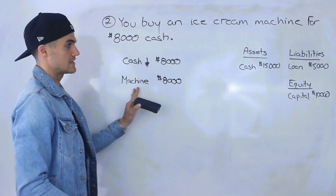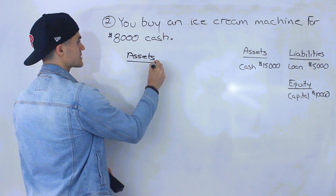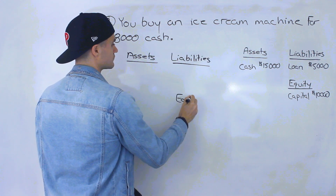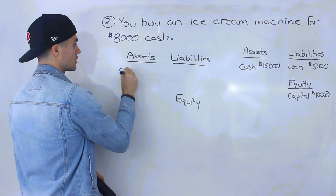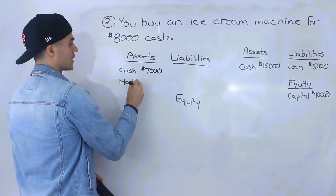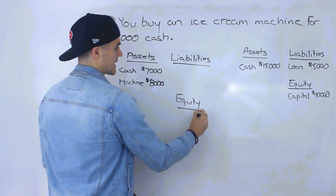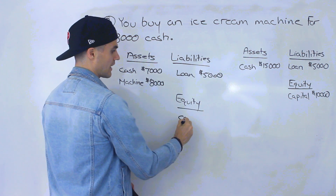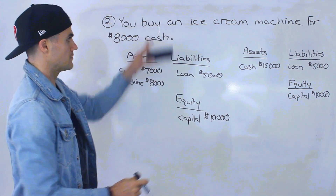Notice that this machine is an asset. So the new balance sheet after this transaction will have assets, liabilities, and equity. Cash went down by eight thousand dollars, so if you had fifteen thousand dollars cash initially, you're going to have seven thousand now. And then you have a machine for eight thousand. The right side stays the same — we still have that loan for five thousand under liabilities and the ten thousand dollars capital you invested.